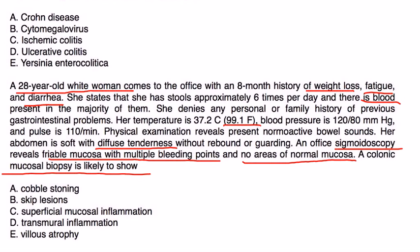This patient has ulcerative colitis - she has the classic weight loss, abdominal pain, and bloody stools. Cobblestone stoning, skip lesions, and transmural inflammation - that's all describing Crohn's disease, which is the other big form of inflammatory bowel disease. So it's not A, B, or D.